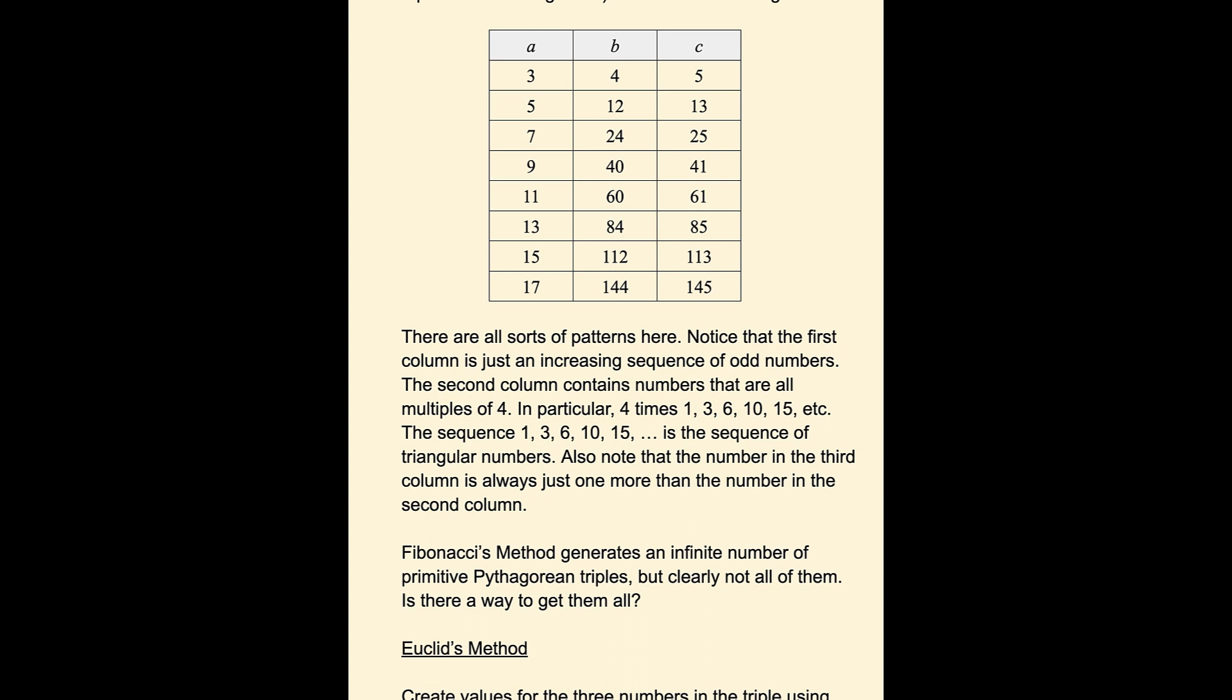Also note that the number in the third column is always just one more than the number in the second column, and that will be consistent for all those numbers generated in this way.